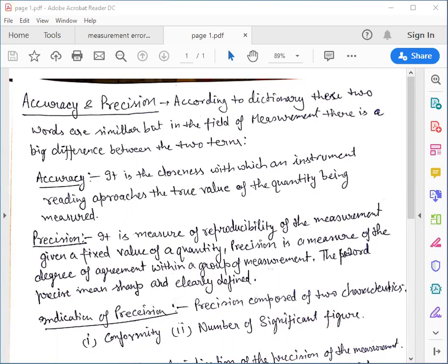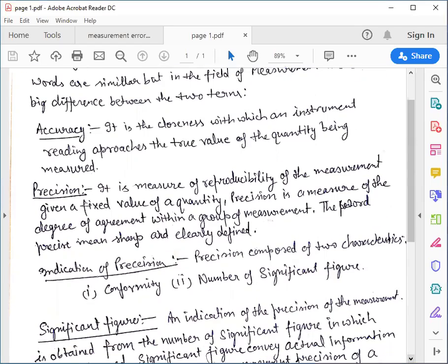So precision depends on the group of readings. Like we have two groups of readings. One in which the quantity is repeated more times is called more precision. And it doesn't mean that more precise reading will be more accurate.